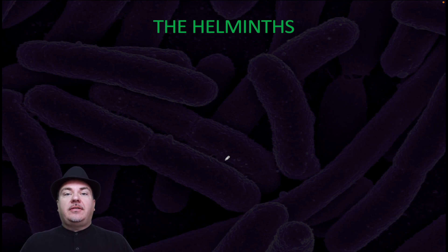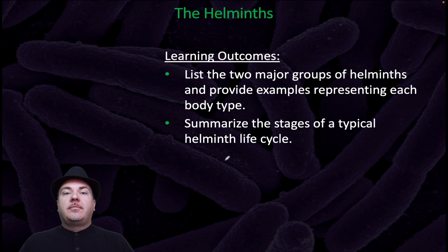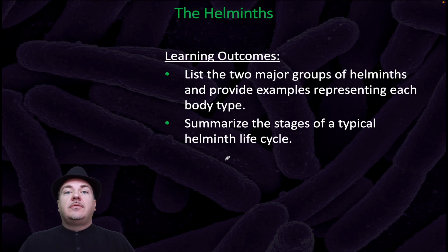Dr. Sage here, back to continue our discussion of the eukaryotes that we study in microbiology. In today's video, we're going to discuss the Helminths. By the end of this video, you should be able to list the two major groups of Helminths and provide examples representing each body type. You should also be able to summarize the stages of a typical Helminth life cycle.